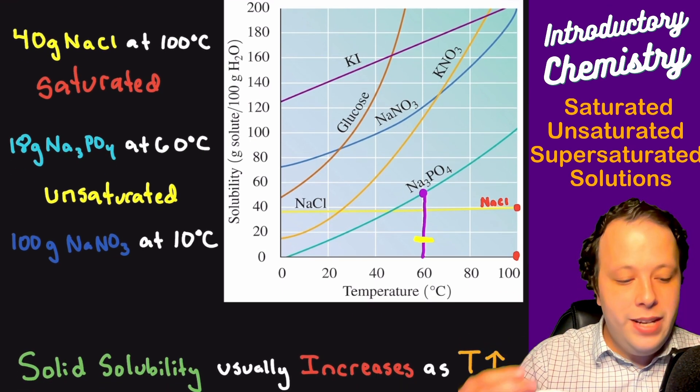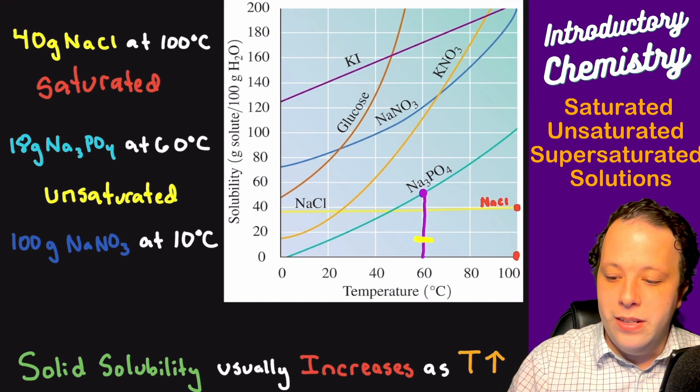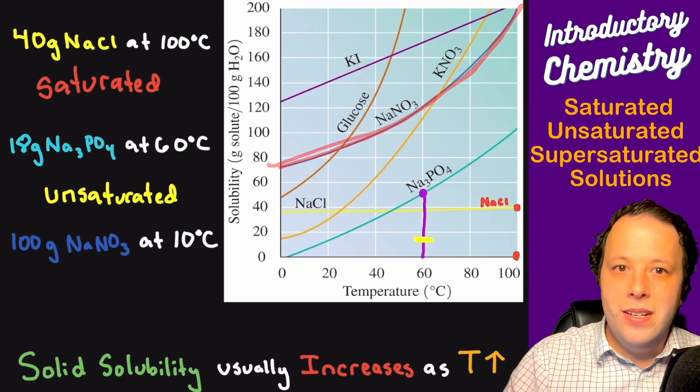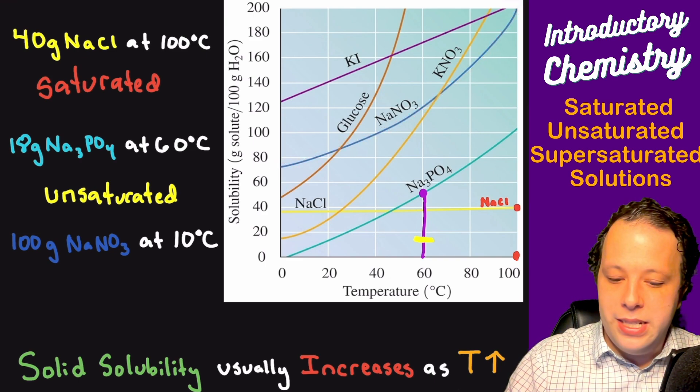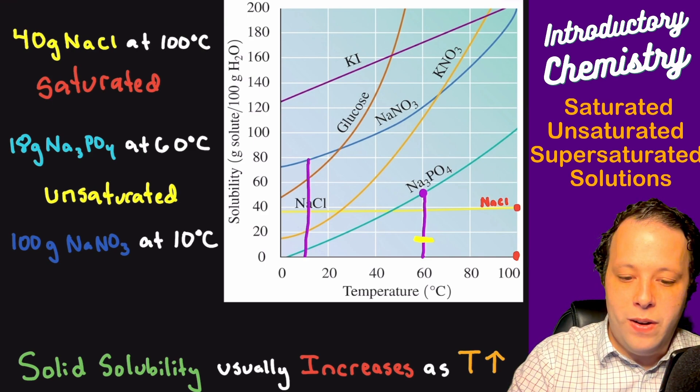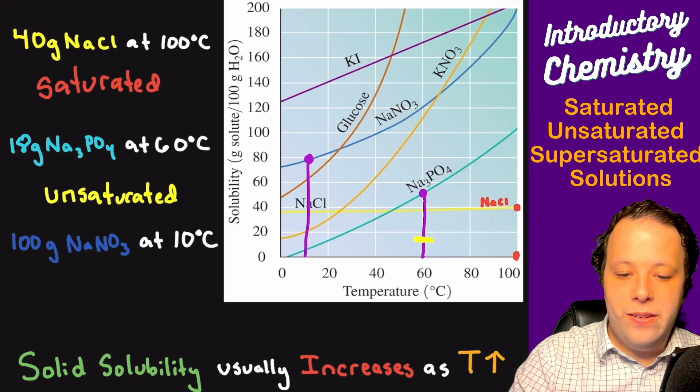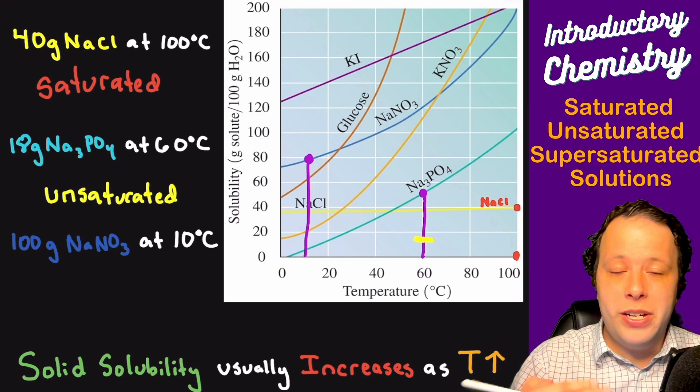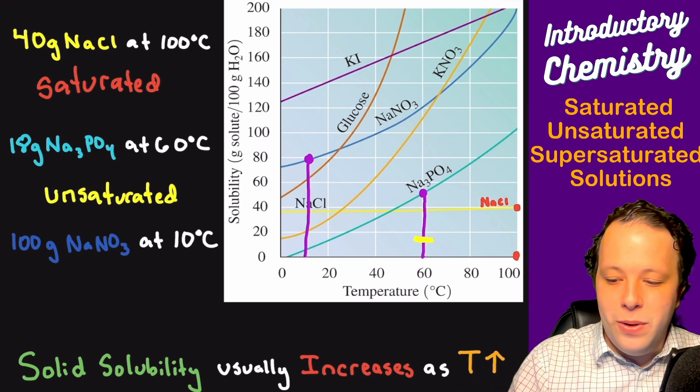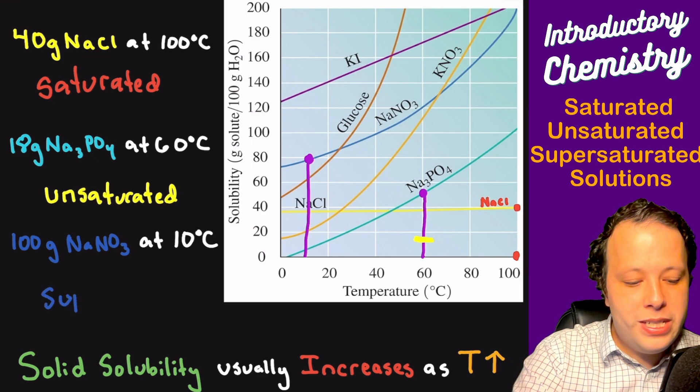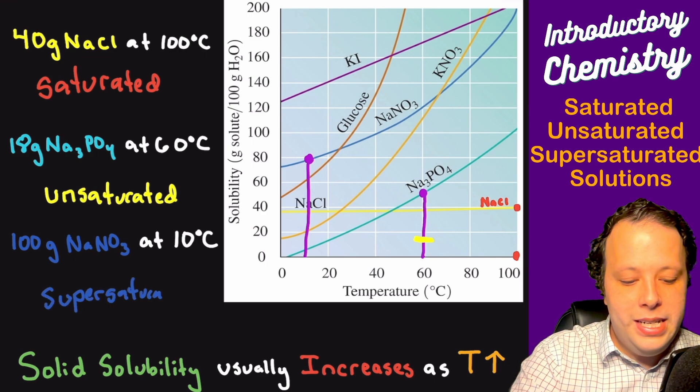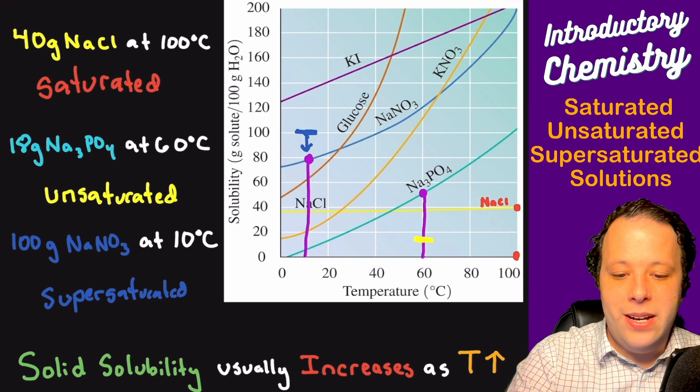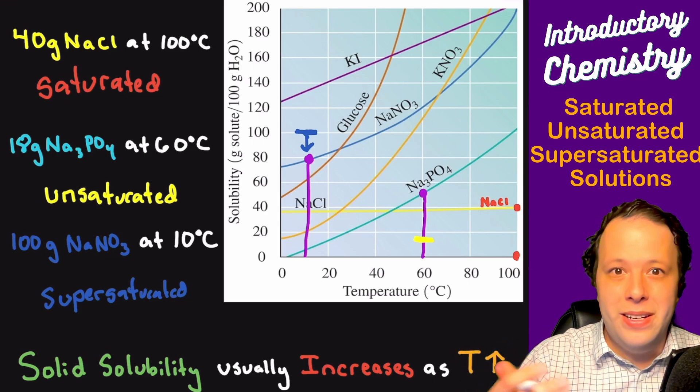The next one is sodium nitrate. It says 100 grams of sodium nitrate at 10 degrees C. Here's sodium nitrate is this blue curve here. We are at 10 degrees C. 10 degrees will trace up to our line. At roughly about 80 grams is how much can fit in solution at 10 degrees C. What this would technically be is a supersaturated solution because it is above where it needs to be. Here's where 100 is and it's going down to here where it would be the saturation limit.